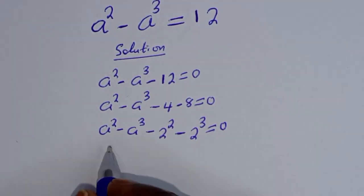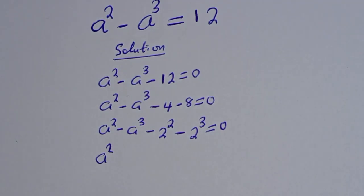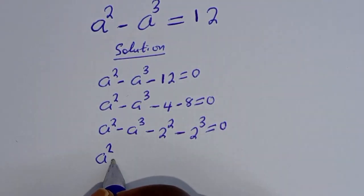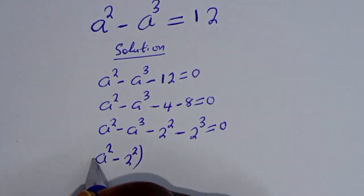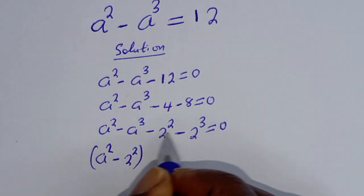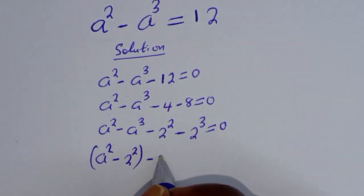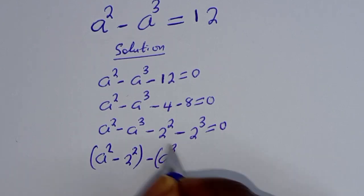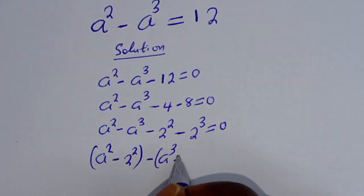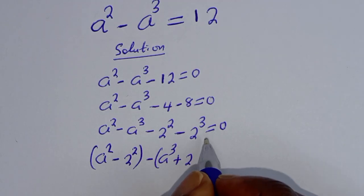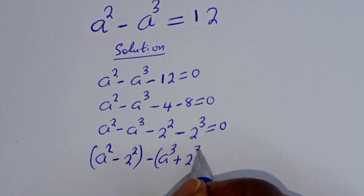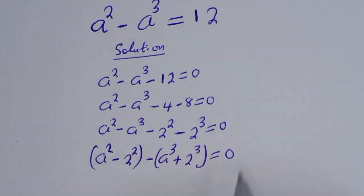This gives us a squared minus 2 squared, bracket minus a raised to power 3 plus 2 raised to power 3, equal to 0.